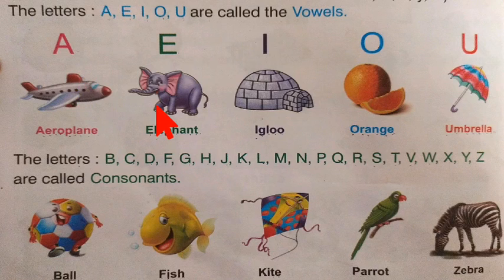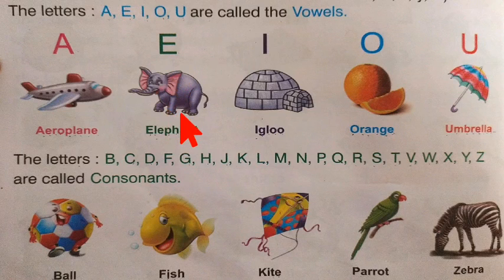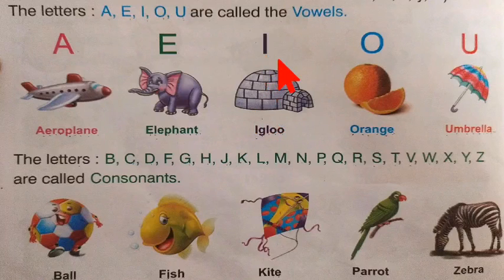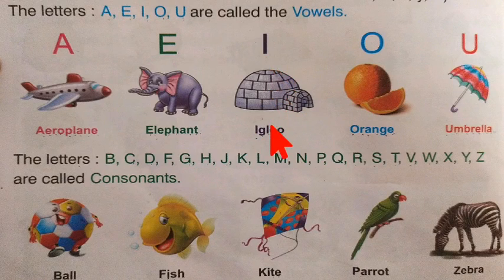Next one: what is this? Elephant. E for elephant. What is this? I for igloo.